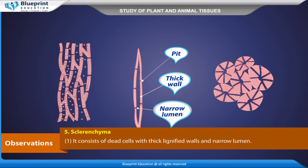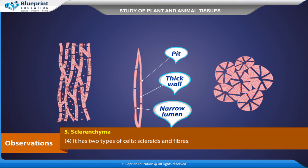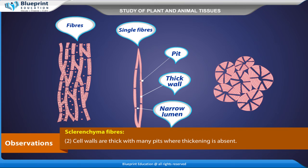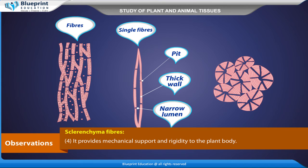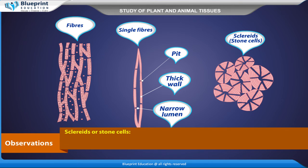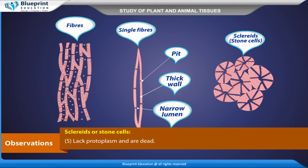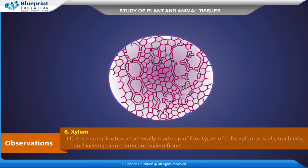Sclerenchyma: It consists of dead cells with thick, lignified walls and narrow lumen. They lack protoplasm and are dead cells. It has two types: sclerides and fibers. They provide mechanical strength and rigidity. Sclerenchyma fibers are elongated with tapering ends, thick walls with many pits where thickening is absent, and very narrow lumen — providing mechanical support and rigidity to the plant body. Sclerides (stone cells) are isodiametric, irregular in shape, with narrow lumen, branched or simple pits, thick highly lignified secondary walls, and lack protoplasm.